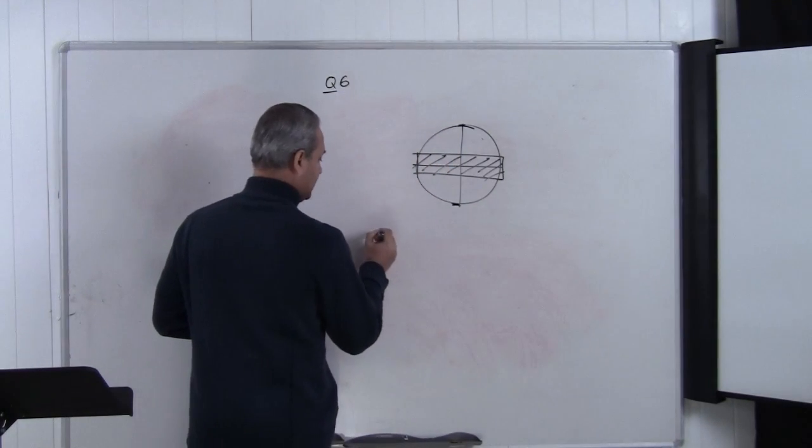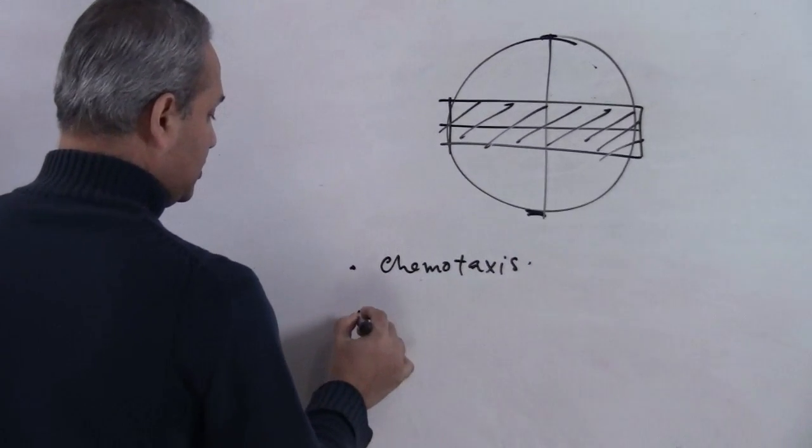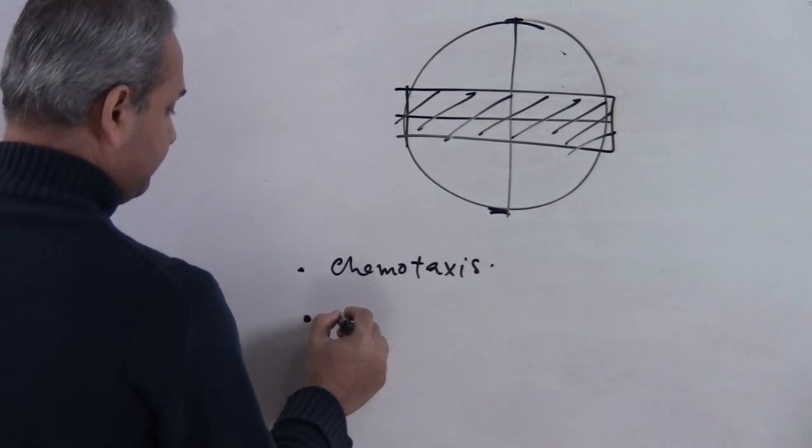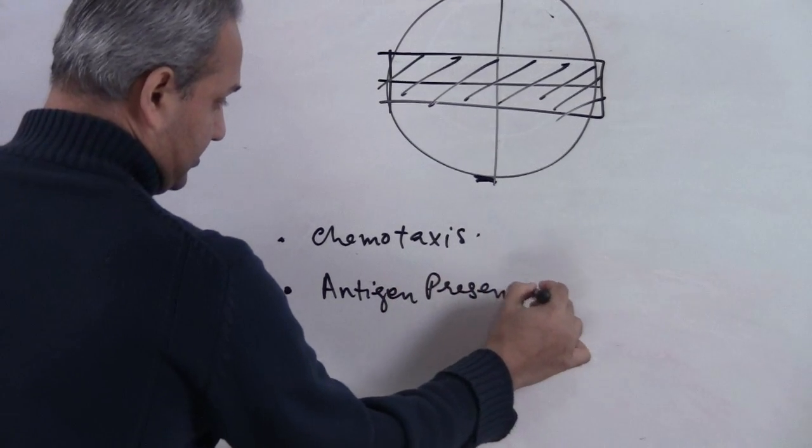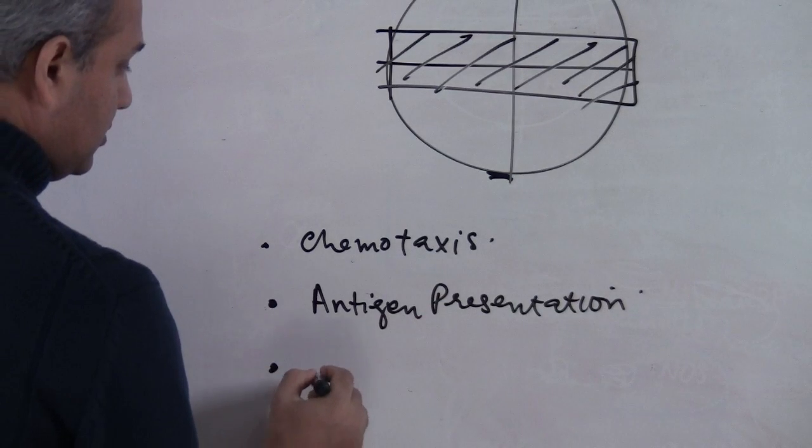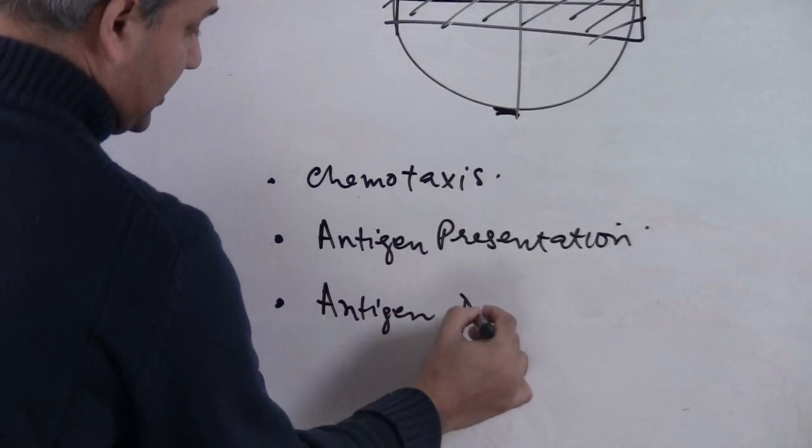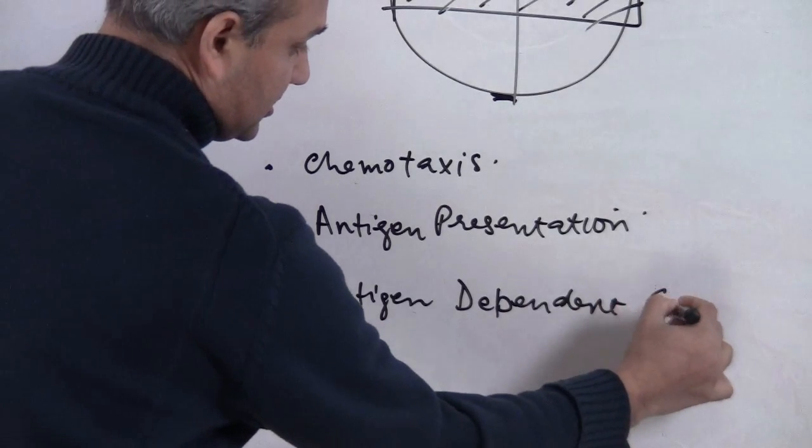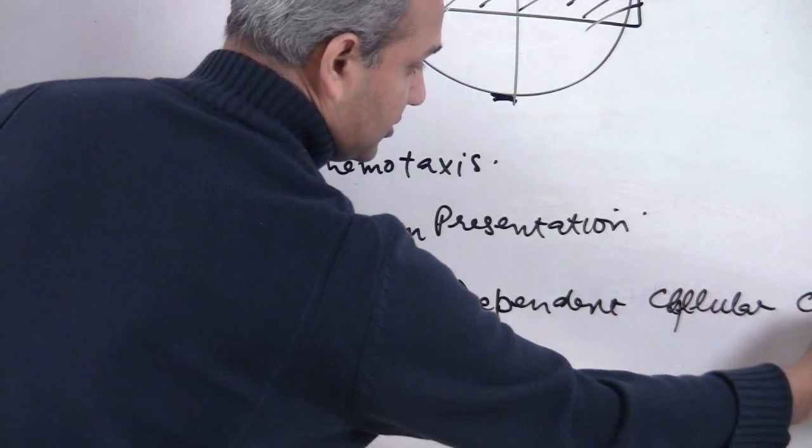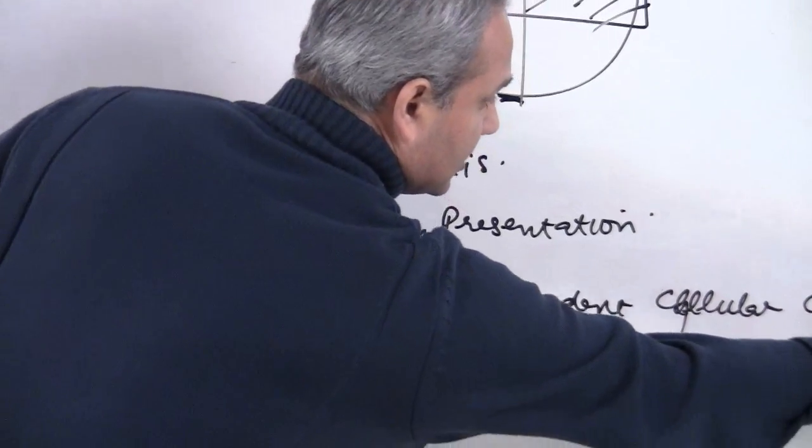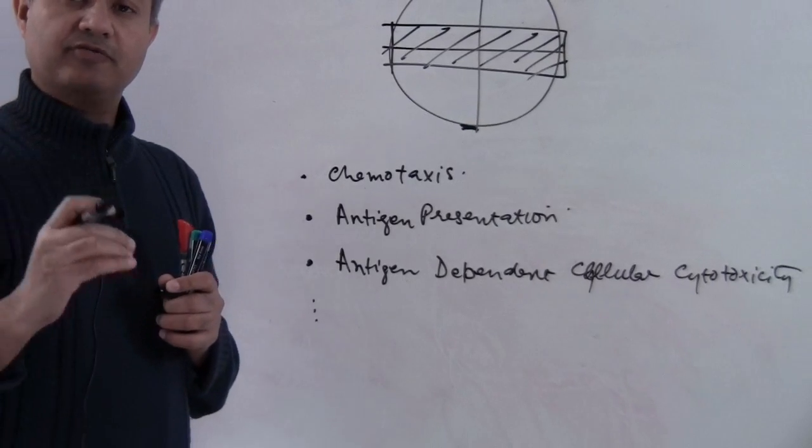So is the eosinophil going to be number 1, causing chemotaxis? Number 2, do they do antigen presentation? Number 3, do they do antigen-dependent cellular cytotoxicity? So what is the function which eosinophil would be performing?